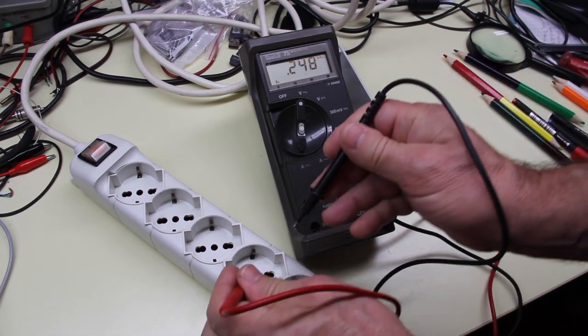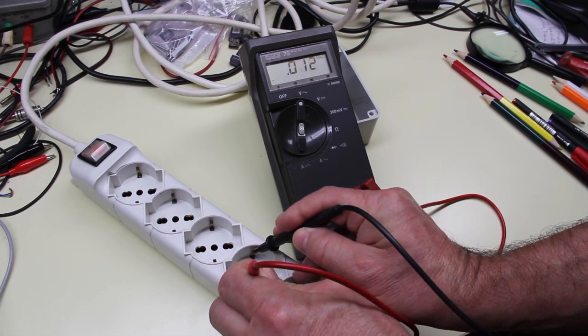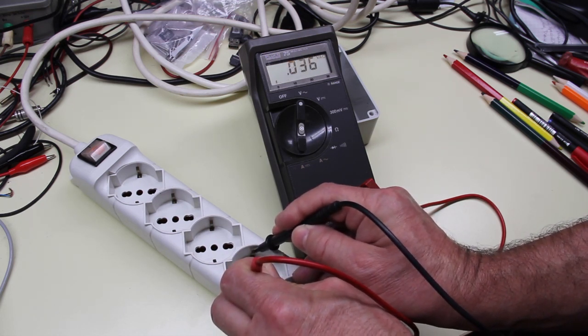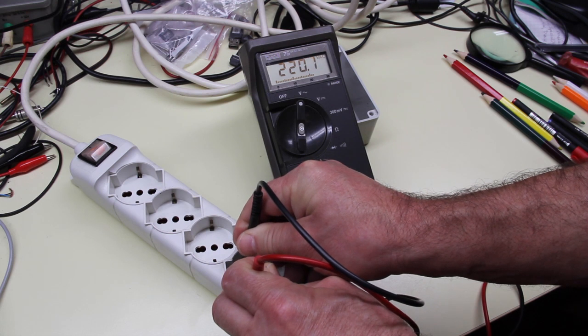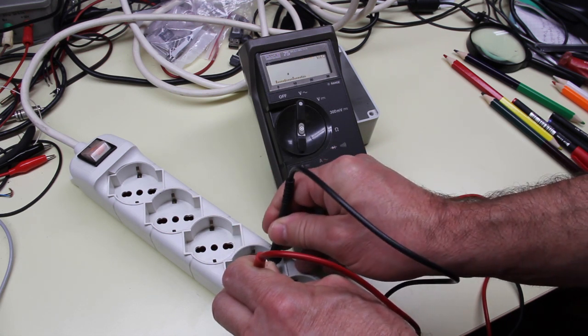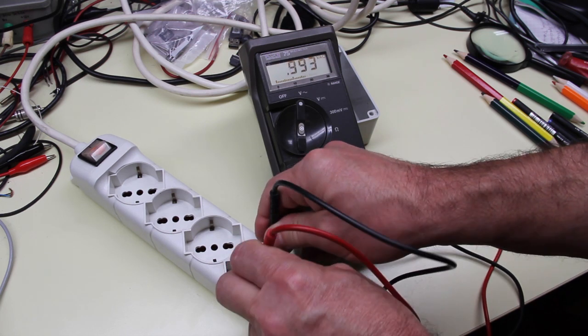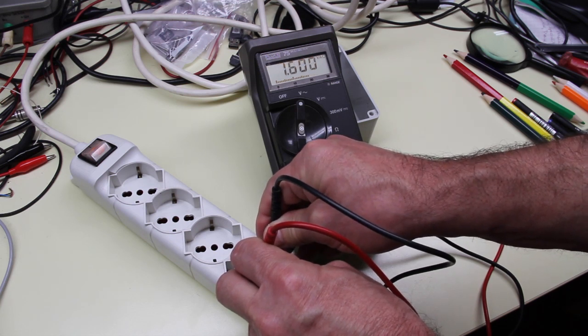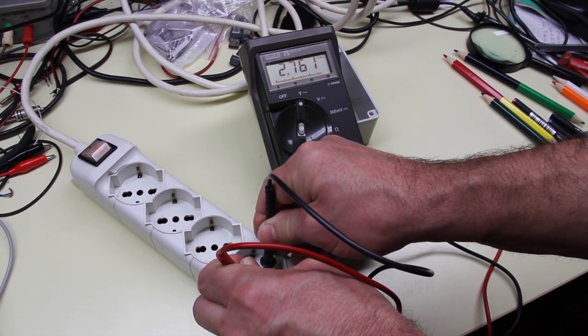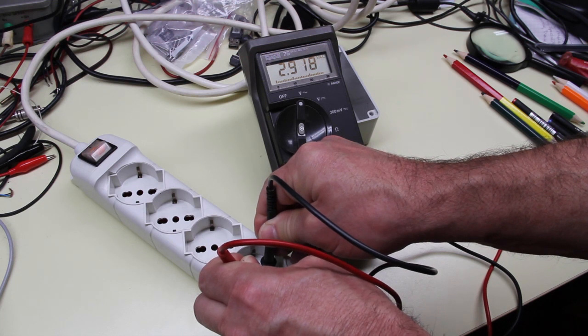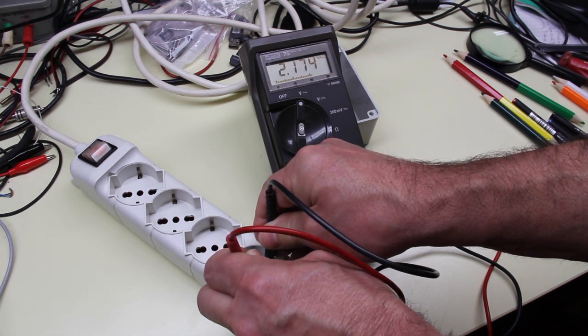And I can demonstrate this by reading with the multimeter. This is the same earth - zero volts. This is the earth toward the live - 220 volts. Earth and neutral, and we have 2.6, 2.7 volts, 2.8, 2.9 - it is not stable, it is variable, but definitely not the same voltage.